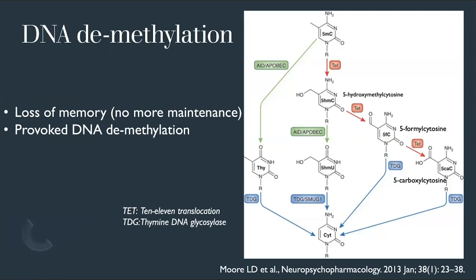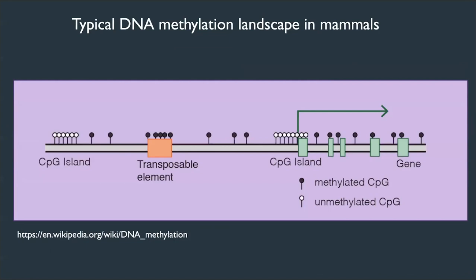DNA can also be demethylated. The most studied mechanism involves the TET enzymes, which go through different forms including hydroxymethylation and ultimately lead to demethylation. CpG sites are not homogeneously distributed through the genome — there are high concentrations of CpG sites in two-thirds of human gene promoters. We call these CpG islands. CpG islands also occur outside gene promoters, and transposable or repetitive elements are also rich in CpG sites.